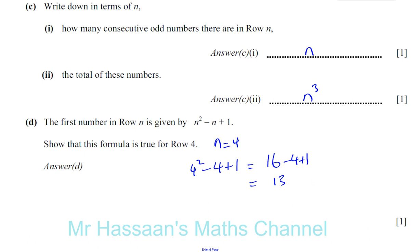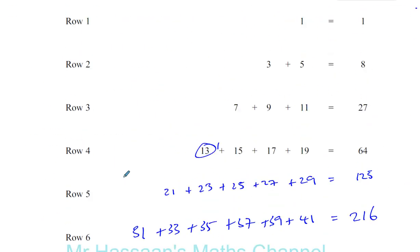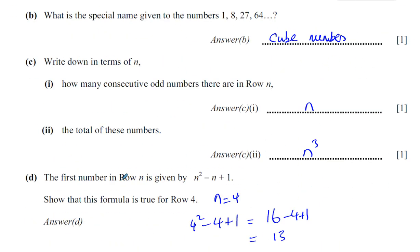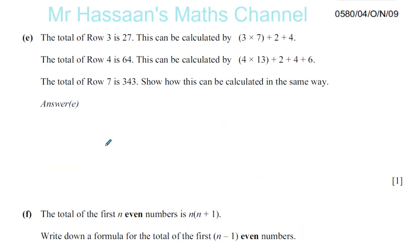So that's question 10 parts A, B, C, and D done. Now the total of row 3 is 27, and this can be calculated by 3 times 7 plus 2 plus 4. The total of row 4 is 64, and this can be calculated by 4 times 13 plus 2 plus 4 plus 6. The total of row 7 is 343. Show how this can be deduced in the same way.